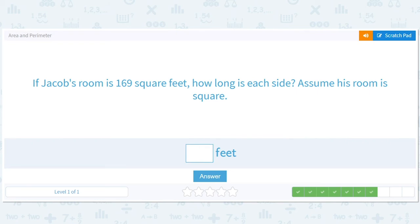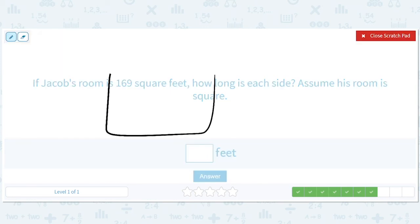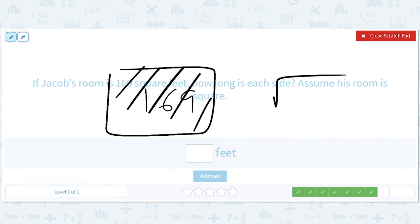If Jacob's room is 169 square feet, how long is each side? Assume his room is square. Okay. So the floor is 169. The question is, what's the square root of 169? And the answer is 13. That's a good one to put in your memory bank.